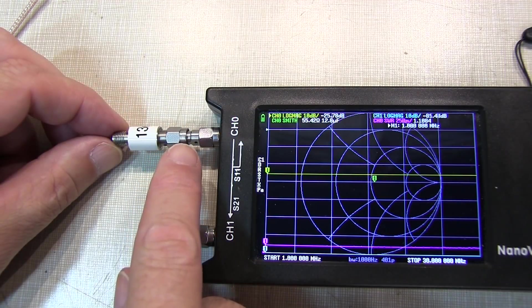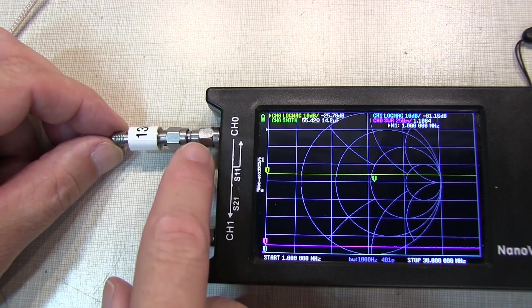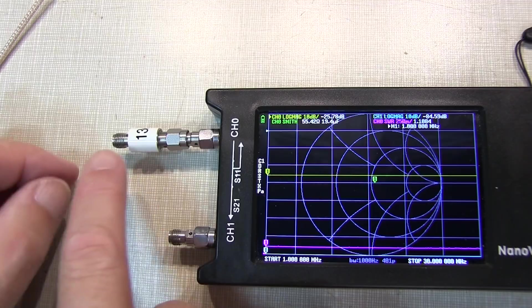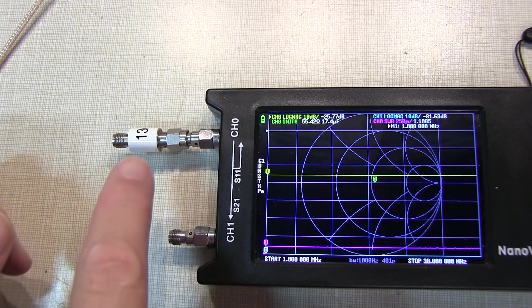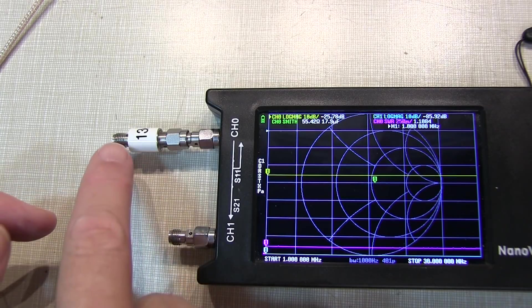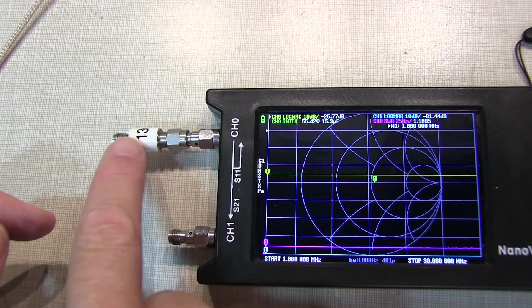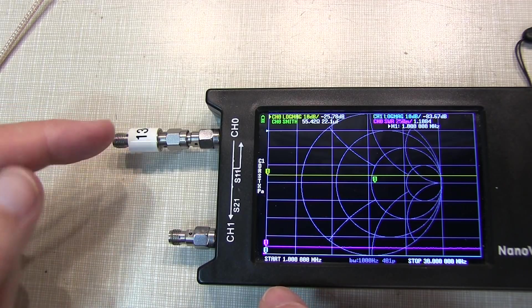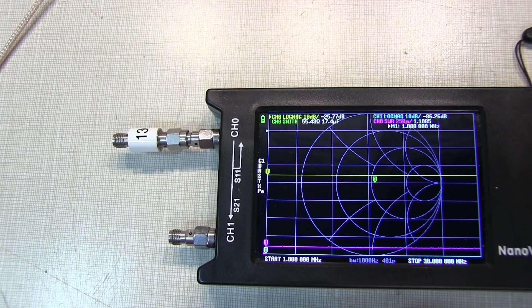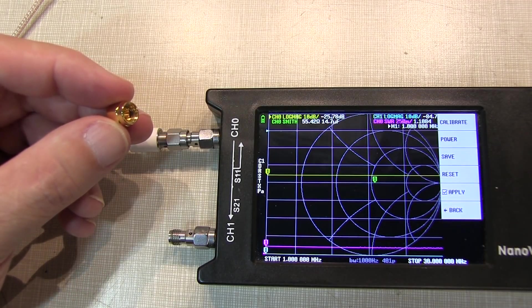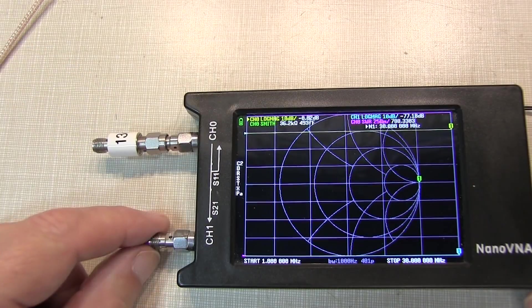So with the 13 dB attenuator applied to channel 0 or port 1, we can then repeat the calibration process using the open, load, short, isolation, and through at this location instead of at this location. That will calibrate out this 13 dB loss and give us a test signal that is within the appropriate signal range for our amplifier. Now for the sake of time, I'm not going to show that calibration process all over again, but that's what we need to do.